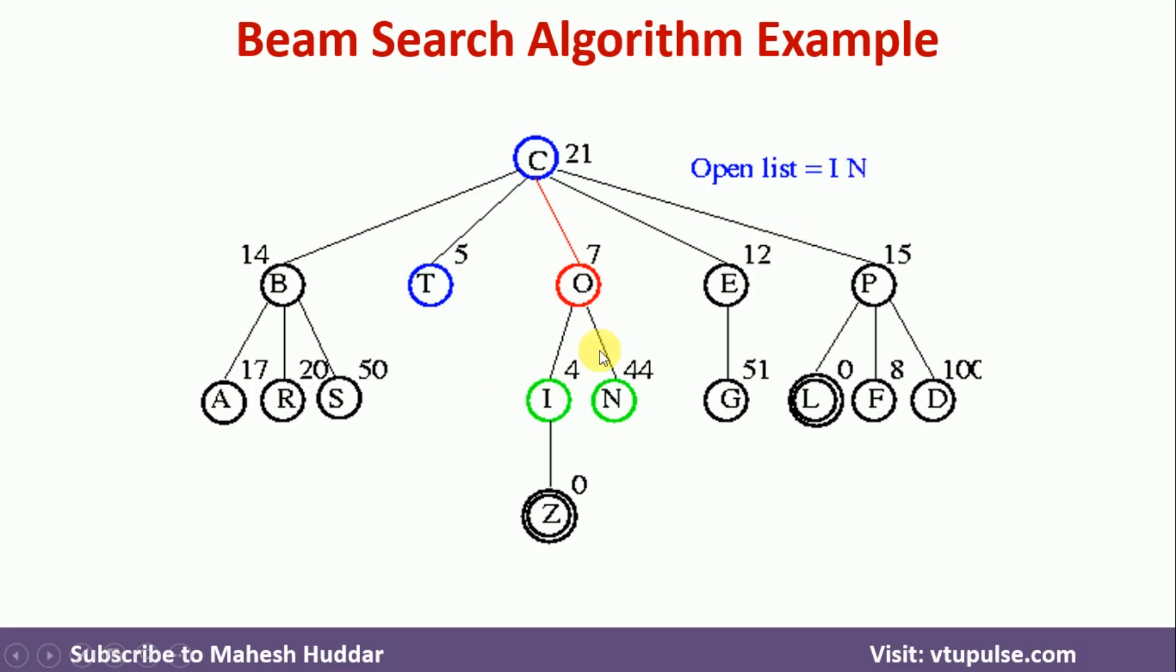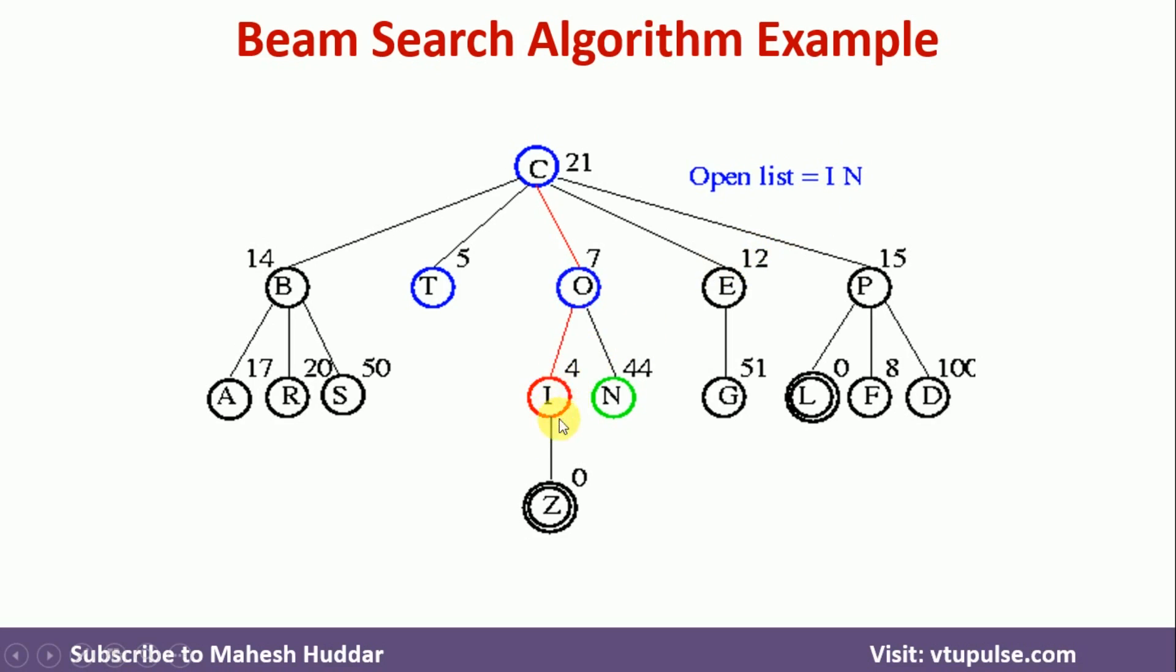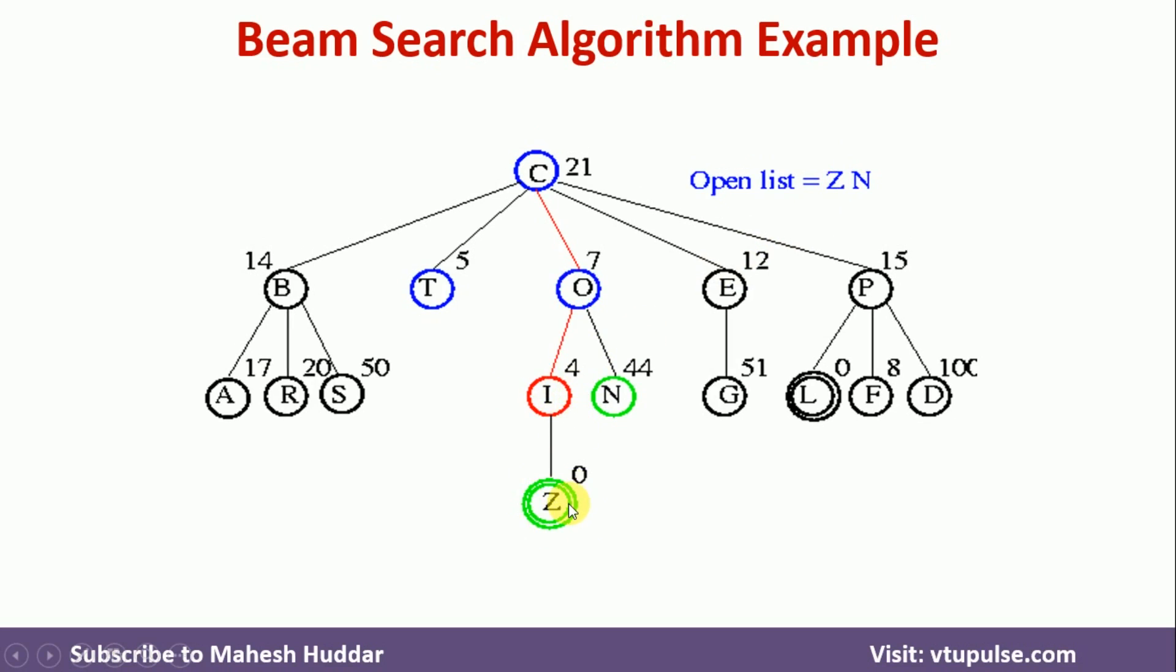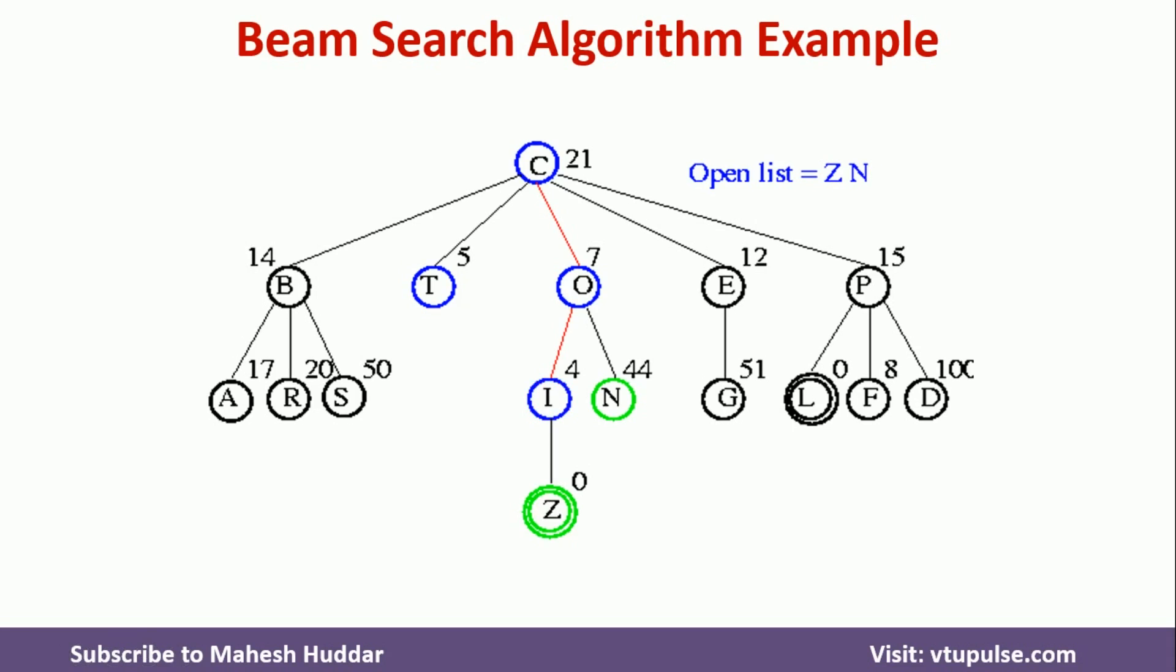Now between these two, I and N, I is having the minimum estimated cost. So I will select I here. So once I examine this particular I, the successor of I is Z in this case. So I have reached this particular Z here. Now I will examine Z. So once I examine this particular Z, Z is a goal node, the meaning is the goal is found here.